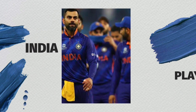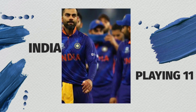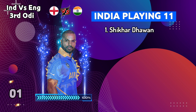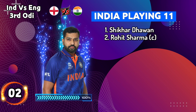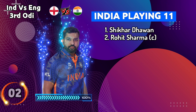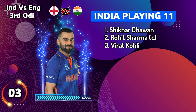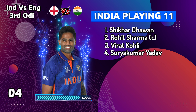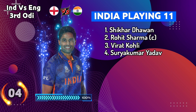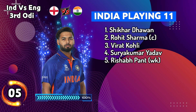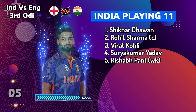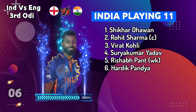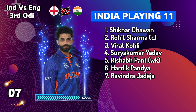Team India playing eleven for the 3rd ODI match: Number 1, Shikhar Dhawan. Number 2, Rohit Sharma. Number 3, Virat Kohli. Number 4, Suryakumar Yadav. Number 5, Rishabh Pant. Number 6, Hardik Pandya. Number 7, Ravindra Jadeja.